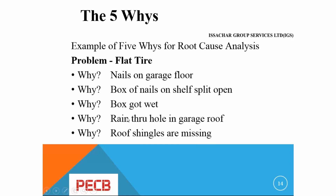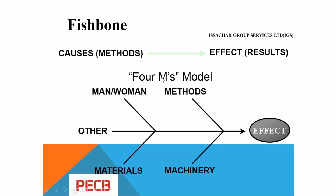The fishbone diagram is another method which includes the four M's model — a cause-and-effect model. Because for every occurrence there will be a consequence; when you address the effects, you will solve the problem once and for all. The four M's include methods, human intervention (manpower), materials, and machinery. When you address these, you will narrow down to either of these four M's as the cause of a gap in your management system.